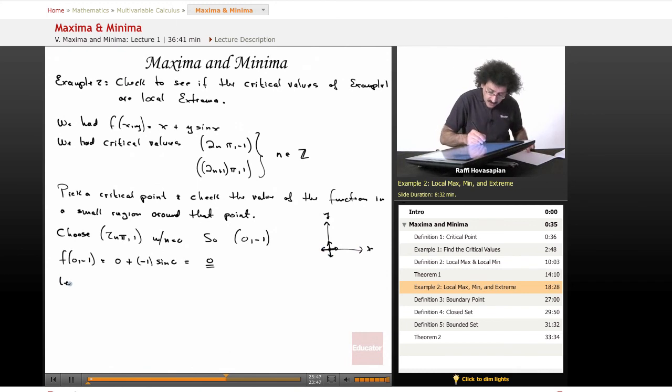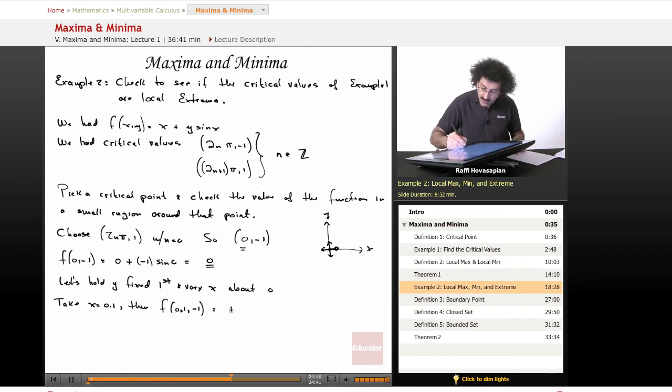So let's hold y fixed first and vary x. I'm going to hold y fixed, and then I'm just going to move a little bit this way and that way around x. Let's vary x about 0, because 0 was the point where we are. So I'm going to move a little bit to the right of 0, a little bit to the left of 0, and see how the function behaves. Let's just take x equals 0.1. Then f of 0.1 minus 1, because we're holding y fixed, is going to end up giving me some number which is positive, 1.7 times 10 to the negative 4.